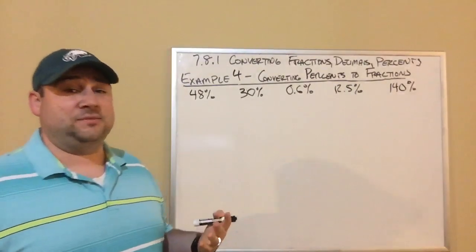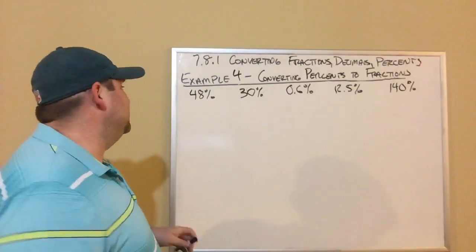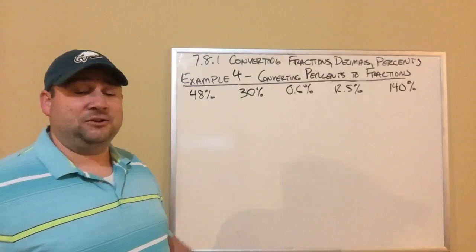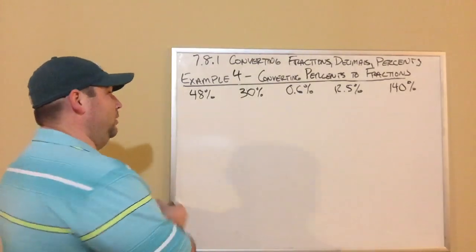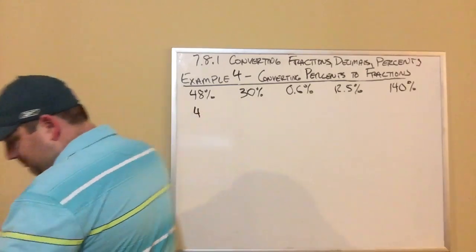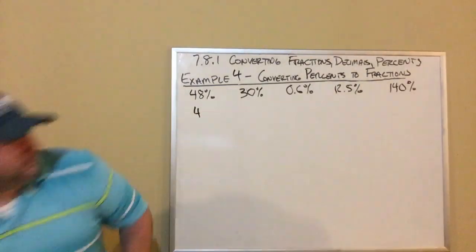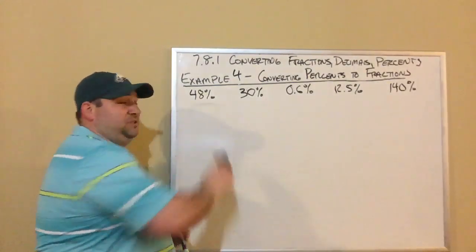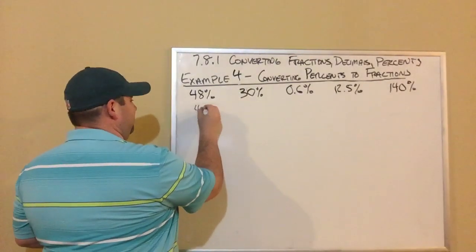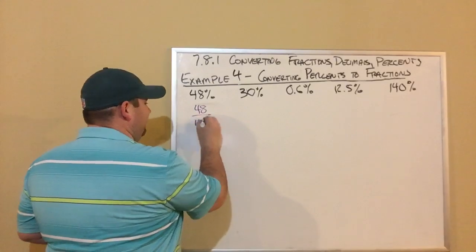So 48% - to convert a percentage to a fraction, all you do is take that percentage and put it over 100. So this is going to be 48 over 100. And then all I'm doing from there is you got to simplify.